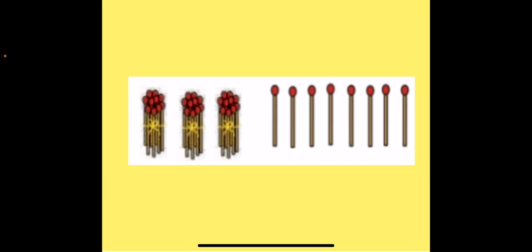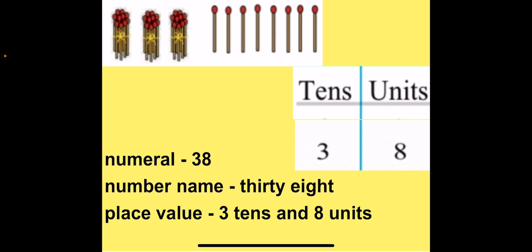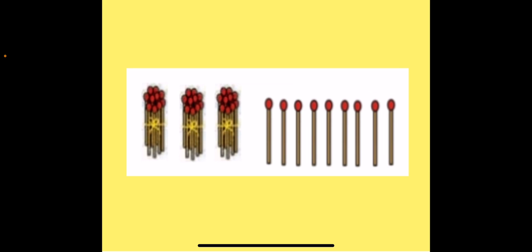When we add 1 more unit to 37 we get 3 tenths and 8 units. So our next number is 38, where 3 is in tenths place and 8 is in units place. So 3 tenths and 8 units give us our next number 38. The number name for 38 is THIRTY-EIGHT. The place value for 38 is 3 tenths and 8 units.